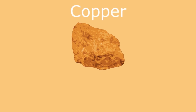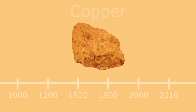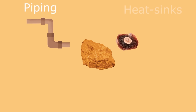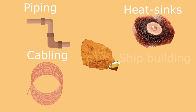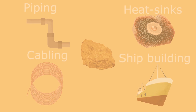Copper is a valuable metal and has been extensively mined for thousands of years. Some of the uses of copper metal include piping, heat sinks in computers to stop them from overheating, cabling, shipbuilding, and as roof coverings.